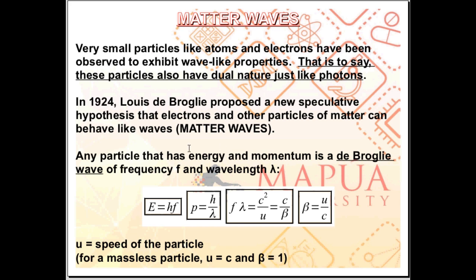Any particle that has energy and momentum is a de Broglie wave of frequency F and wavelength lambda. So just like photons, photon is a particle, massless particle, that has energy and momentum and it has frequency F and wavelength lambda. So, the same can be said for a particle that is behaving like a wave. As long as that particle has energy and momentum, it has frequency and wavelength.